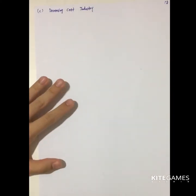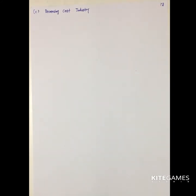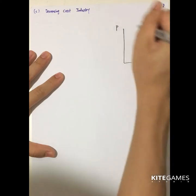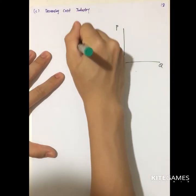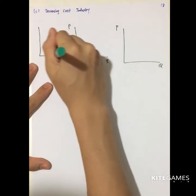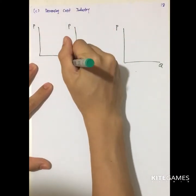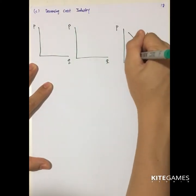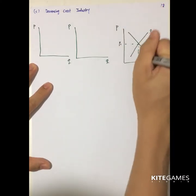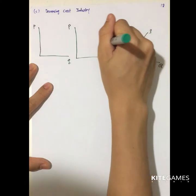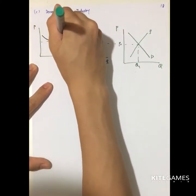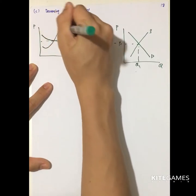Finally, you have the decreasing cost industry. This is the original market situation with demand and supply. Originally, the firm is producing at the minimum average cost.